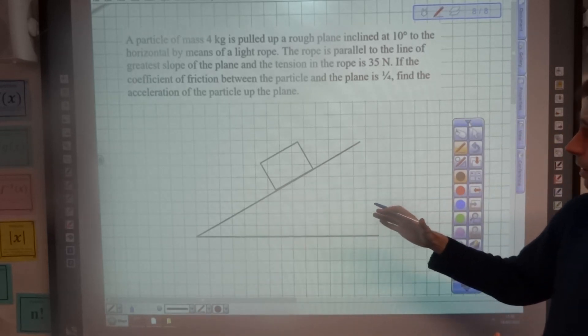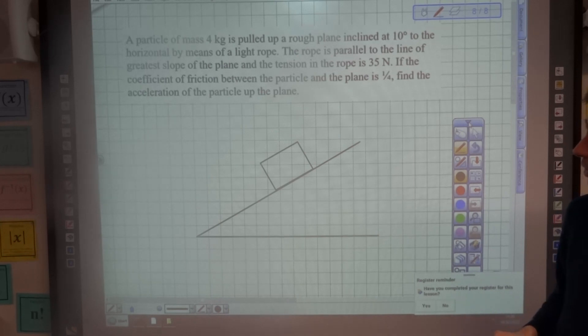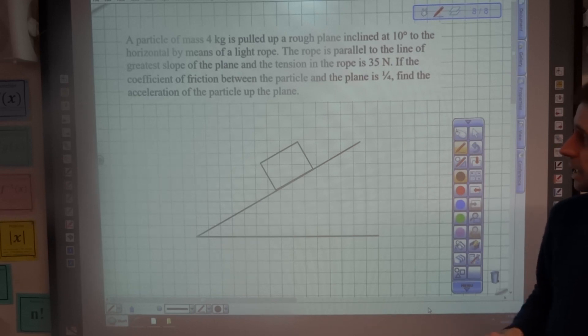So here we go. We have a mass of four kilograms being pulled up a rough plane inclined 10 degrees to the horizontal by means of a light rope. The rope is parallel to the line of greatest slope of the plane, and the tension in the rope is 35 Newtons.